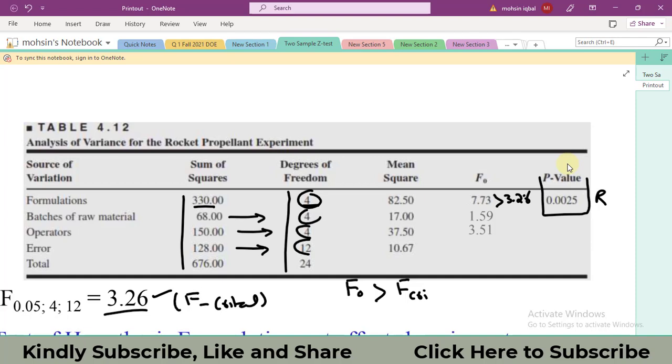So 7.73 is greater than 3.26, it is rejected. First one is rejected. The second one is smaller than 3.26, we fail to reject. And third one is also greater than 3.26, so it is also rejected.